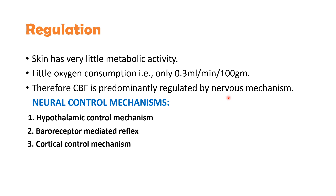Parasympathetic vasodilator fibers do not supply the cutaneous blood vessels. Vasodilation of cutaneous blood vessels occurs by decrease in the sympathetic vasoconstrictor effect and also by local production of some vasodilators like bradykinin. The neural control mechanisms are of three types: hypothalamic control, baroreceptor-mediated reflex, and cortical control mechanisms. The hypothalamus plays an important role in thermoregulation.